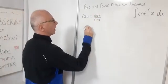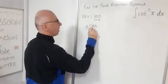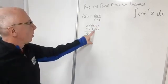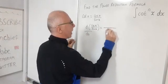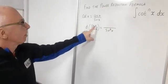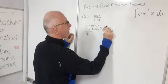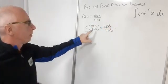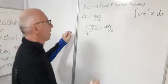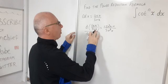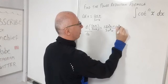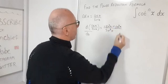So if we take the derivative of cosine of x over sine of x with respect to x, we can use the quotient rule. The denominator gives us sine squared of x. Then we do sine times the derivative of cosine, which is negative sine squared of x. Then the derivative of sine times the negative of the numerator gives us minus cosine squared of x.